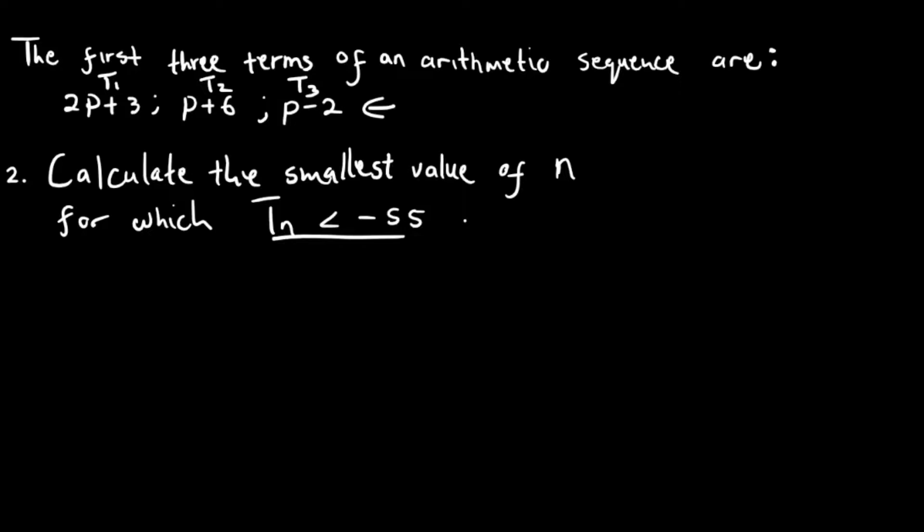So now what's important is that we have our sequence, which is 25, 17, and 9. And we have our d, which is equal to minus 8, and then our a value is going to be 25.